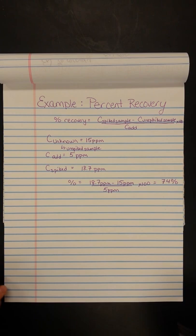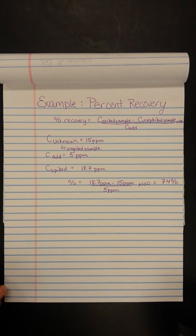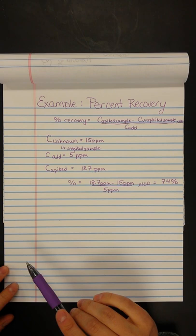We'll talk about that acceptable range in class. So this tells us that our matrix is really affecting the concentration of our analyte or caffeine, so we might have to consider doing a different calibration method other than an external calibration curve. Okay, thanks.